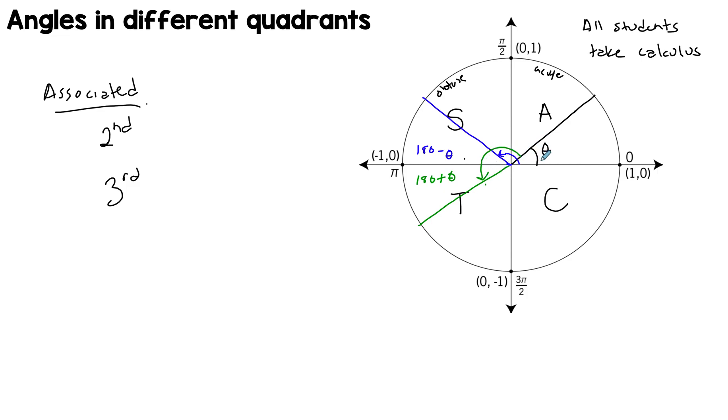They affect your trigonometric functions in a similar way. That's why they're associated. So this is 180 minus θ, and then this is 180 plus θ.